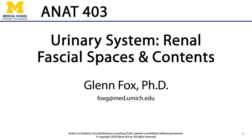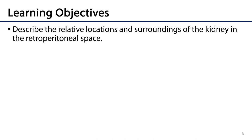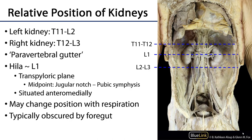Let's talk about the renal fascial spaces and their contents. In this video, we'll discuss the relative locations and surroundings of the kidneys in the retroperitoneal space. The kidneys sit in the retroperitoneal space — that is the space behind the peritoneum — approximately between the T11 and L3 vertebral levels.